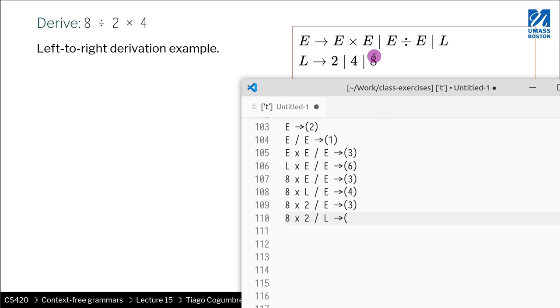And then we'll replace this L by four, which is rule five. So you have eight, two, four. So you see that, indeed, there is a derivation that starts with the starting variable and is able to accept eight times two divided by four.